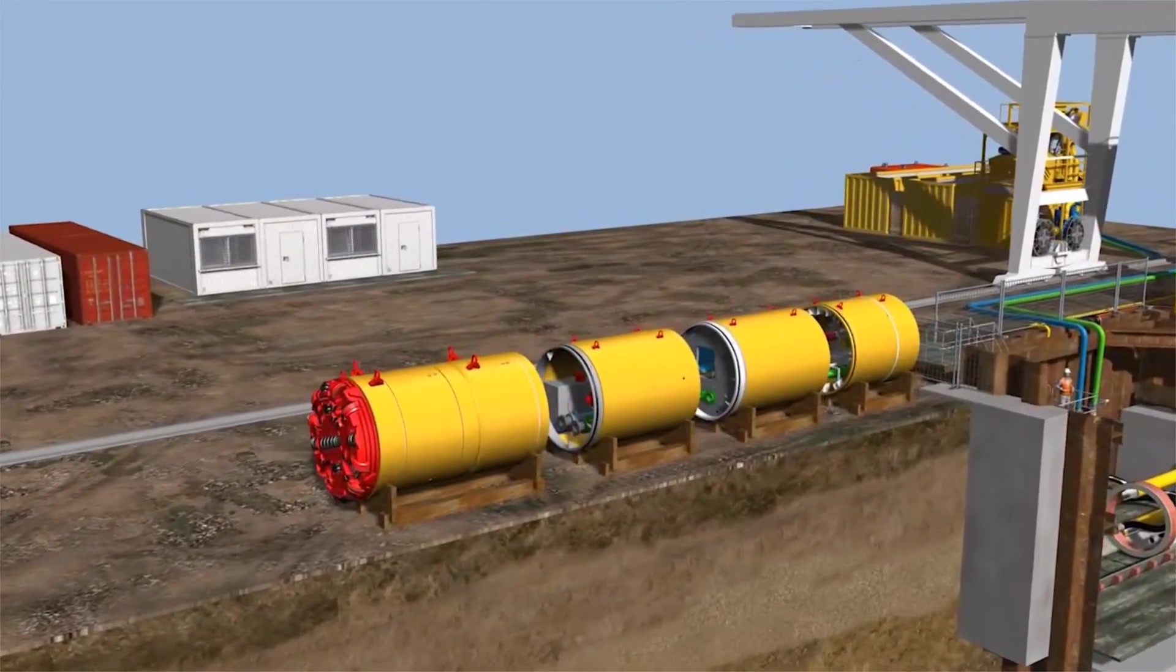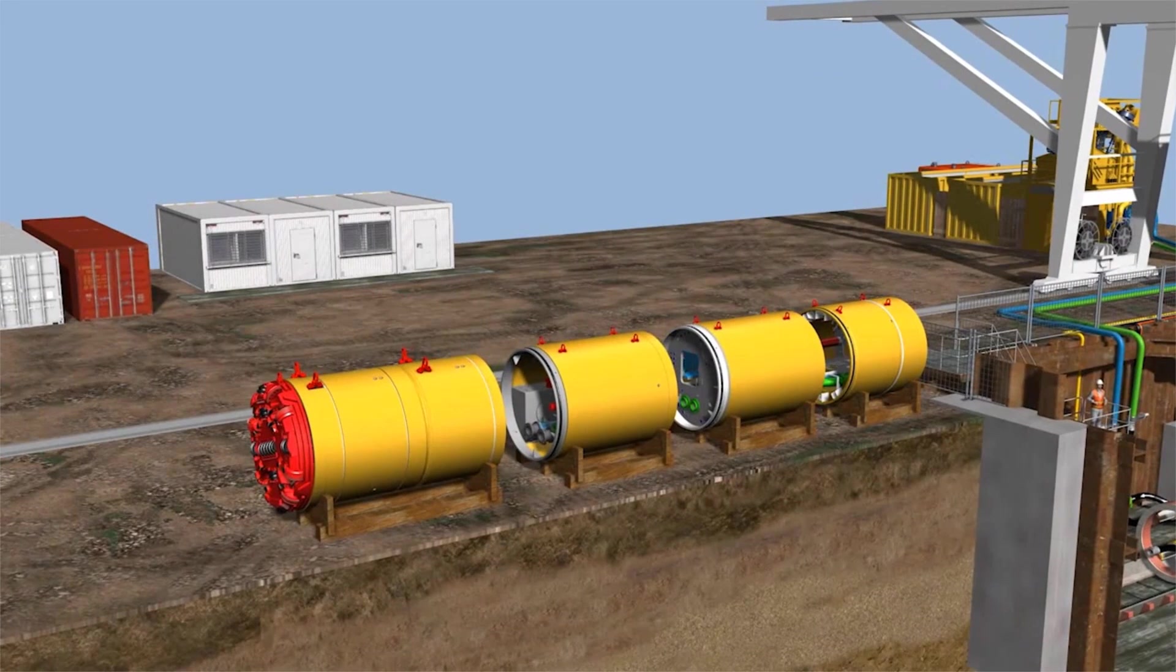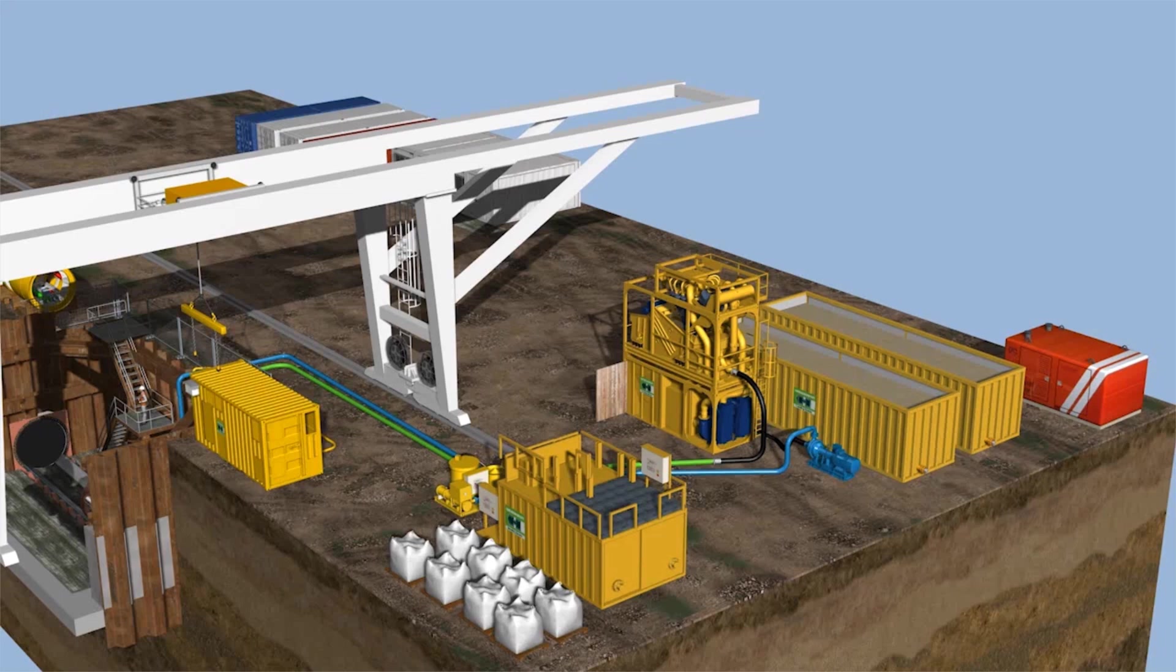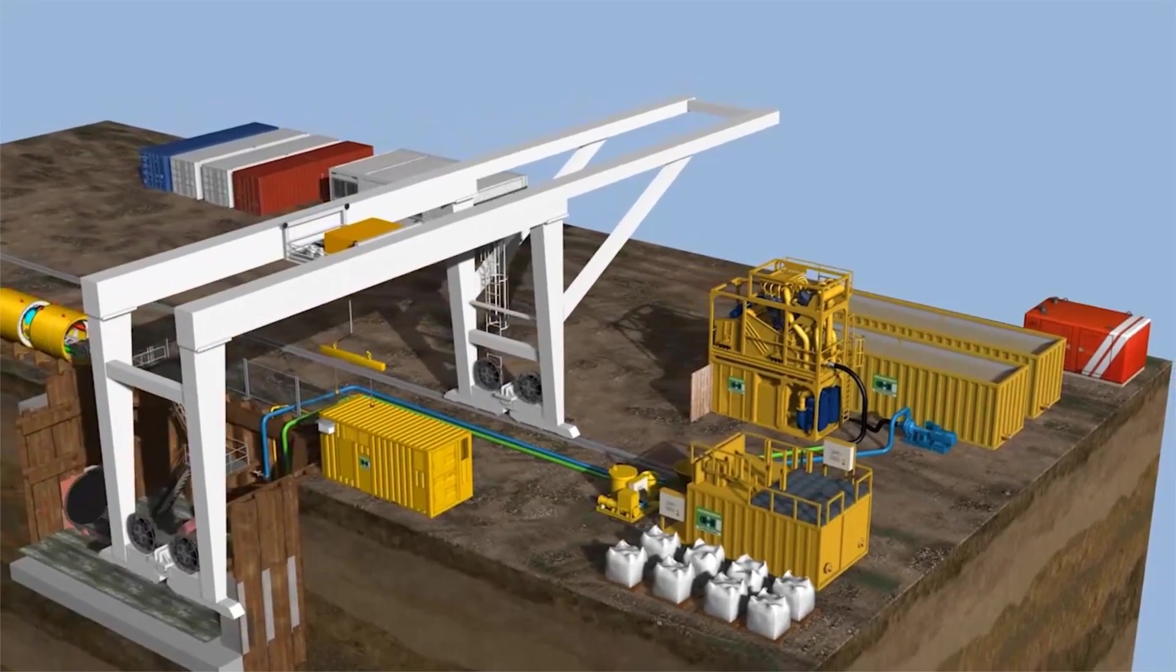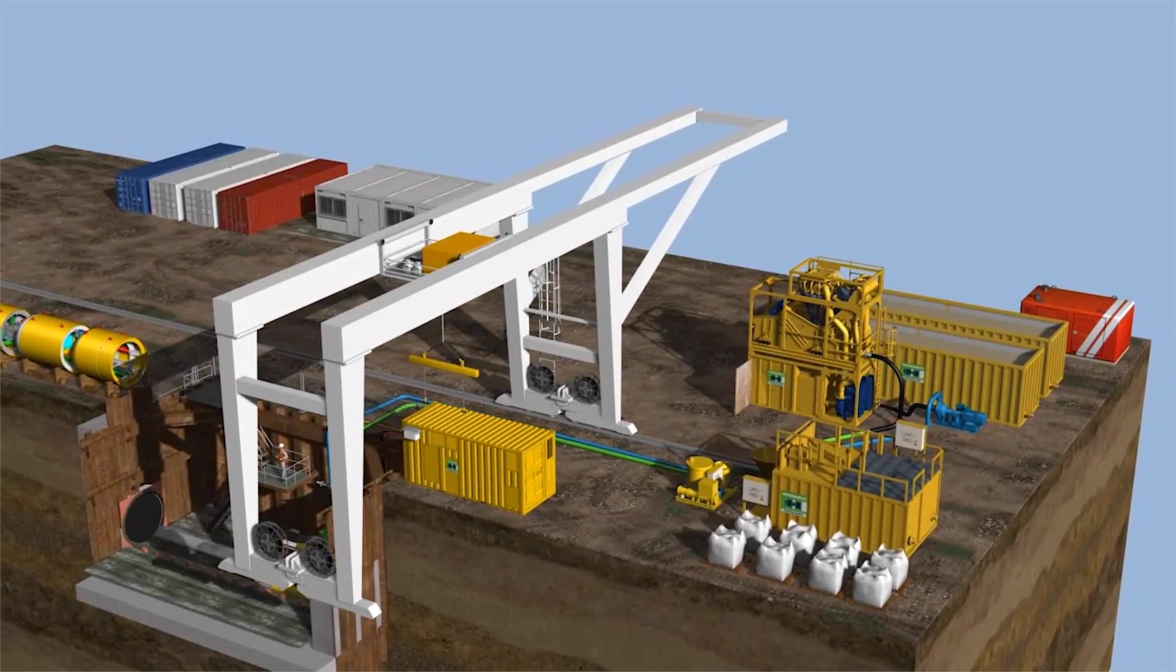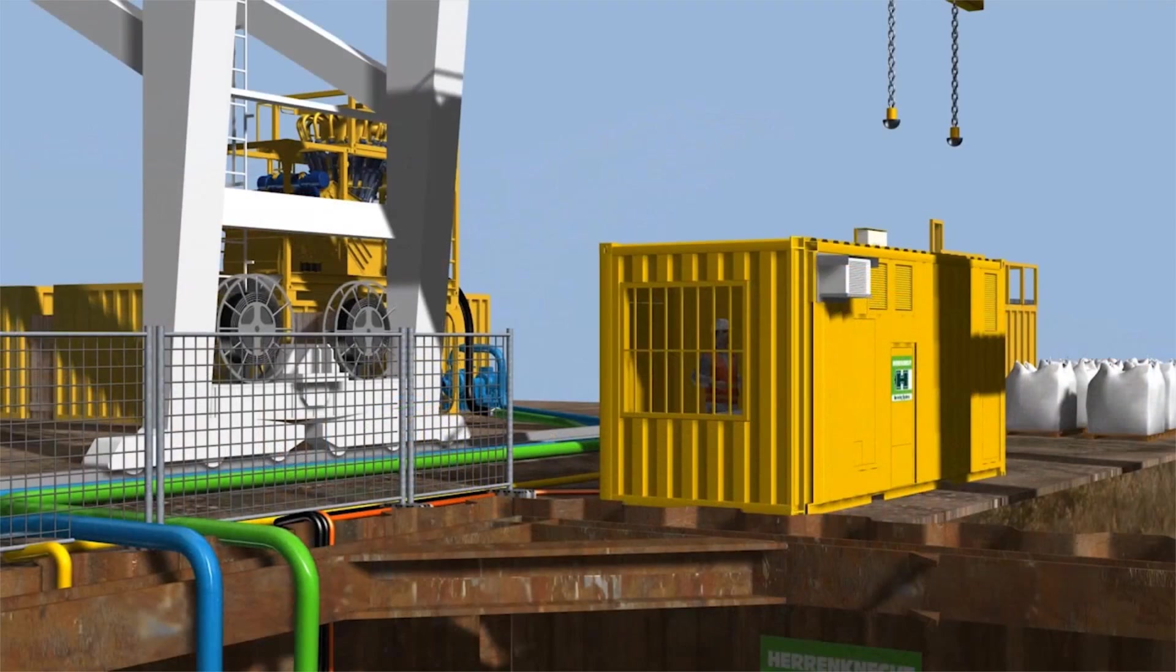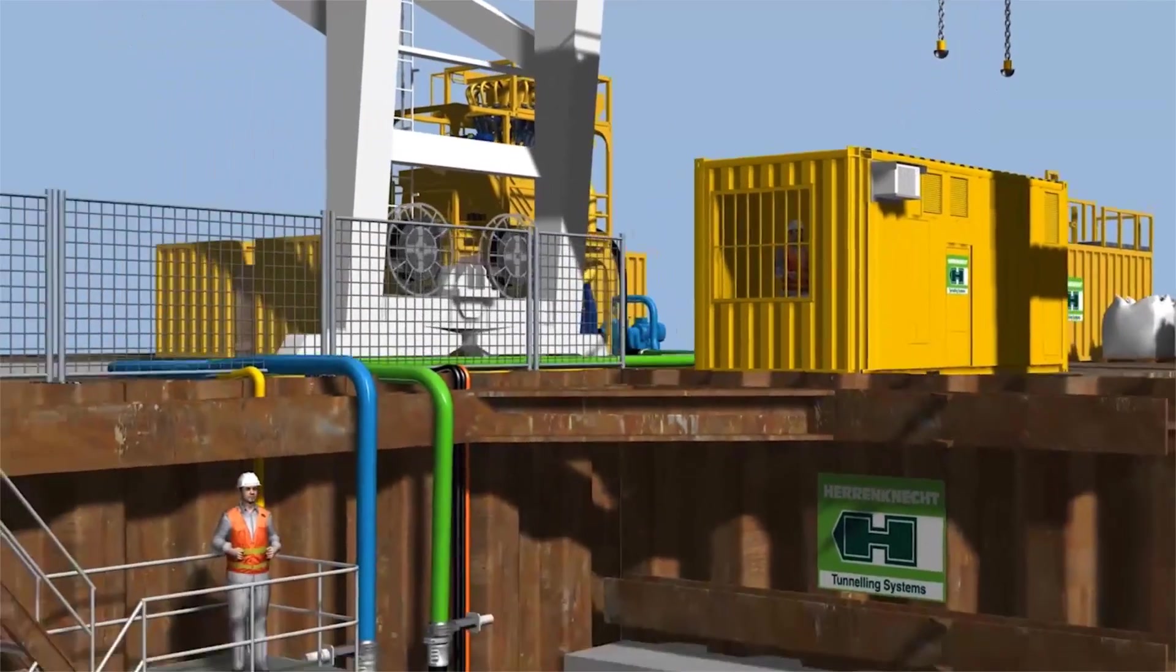The TBM is delivered on site in modules. The container with the control cabin, electrical equipment and hydraulic power unit for the jacking station is positioned next to the launch shaft so that the machine operator can see the jacking station.